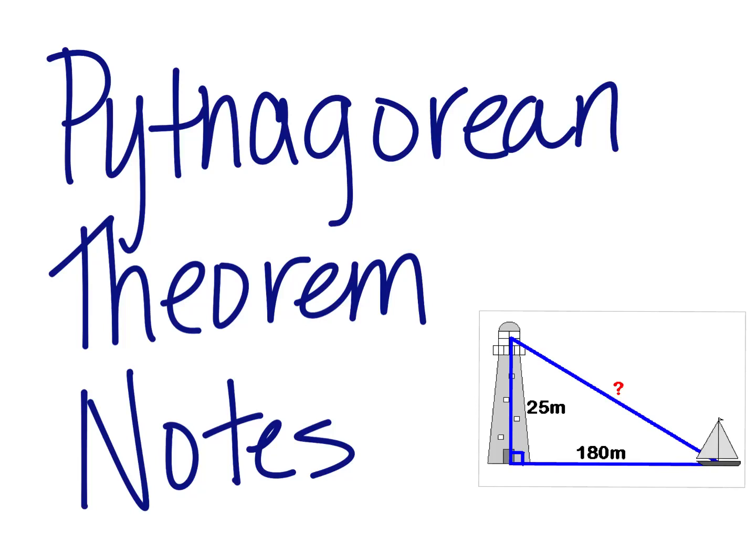Pythagorean Theorem Notes. On this page, you can see a real-life example of using the Pythagorean Theorem. The Pythagorean Theorem provides us with a real-world application of radicals. In this example, we can use right triangles and the Pythagorean Theorem to determine the distance from the top of the lighthouse to the sailboat. Let's learn how to do this together.